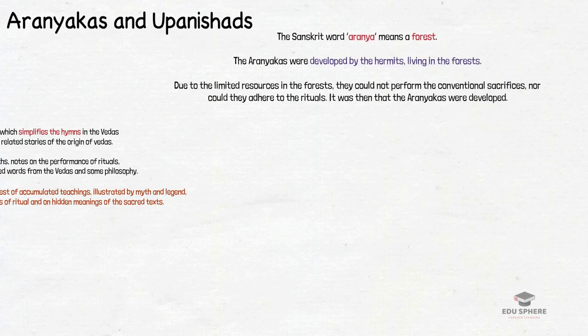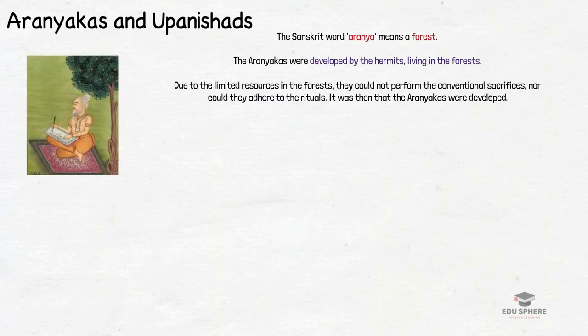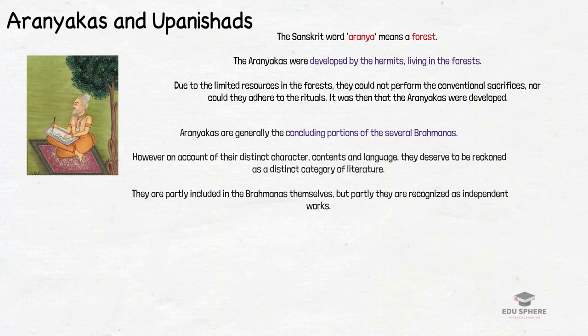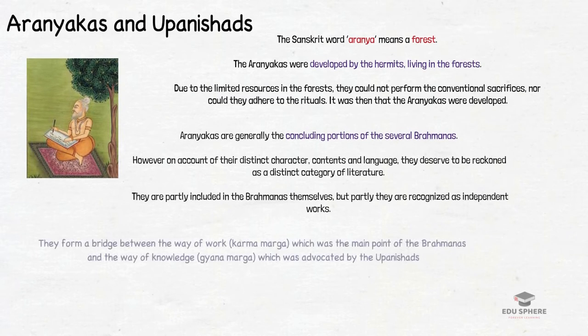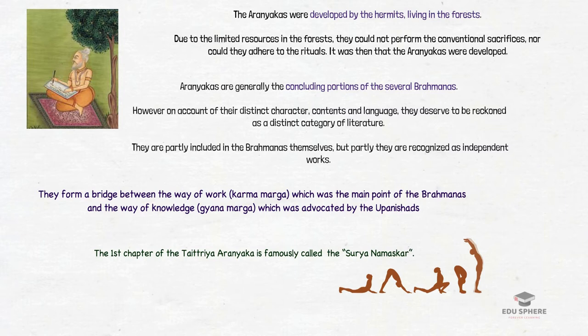The third group is the Aranyakas and Upanishads. The Sanskrit word Aranya means a forest, and the Aranyakas were developed by hermits living in forests. Due to limited resources, they could not perform conventional sacrifices or adhere to the rituals, so the Aranyakas were developed. They are generally the concluding portions of the several Brahmanas but, on account of their distinct character, contents and language, they deserve to be recognized as a distinct category of literature. With the advent of the Aranyakas, the emphasis on sacrificial rites seems to be diluting, and a shift towards philosophical and spiritual interpretation of rituals is evident.